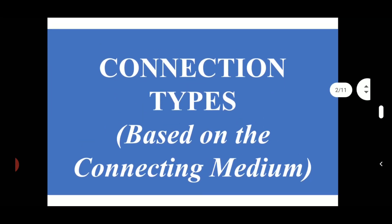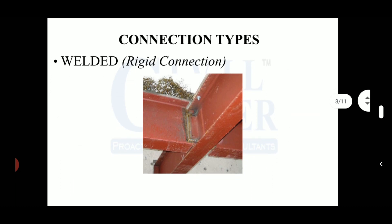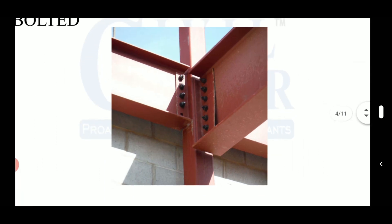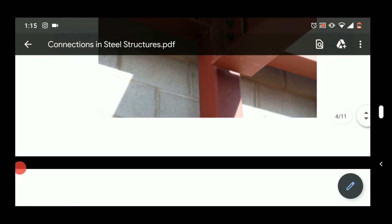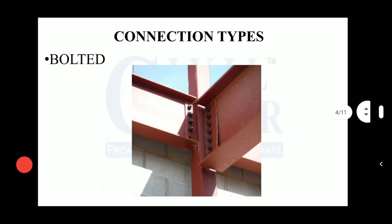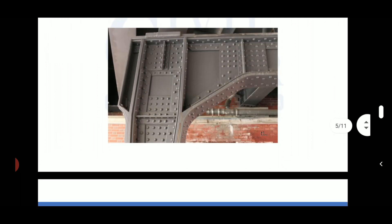Now we'll discuss connections in steel structures. These are the connection types based on the connecting medium. The first connection type is the welded connection, also known as the rigid connection. The second connection type is the bolted connection — as you can see in this figure, these are the bolts. The third type of connection is the riveted connection, as you can see, rivets are being used here. So these are the three types of connections.